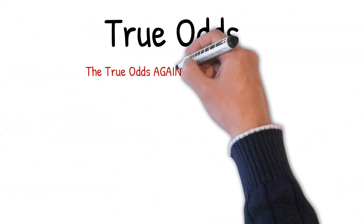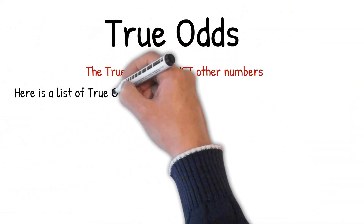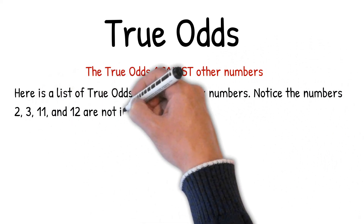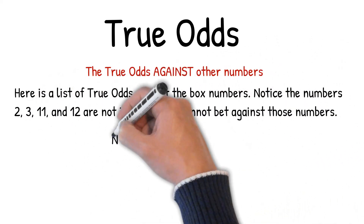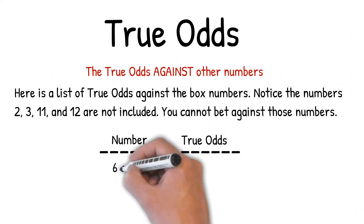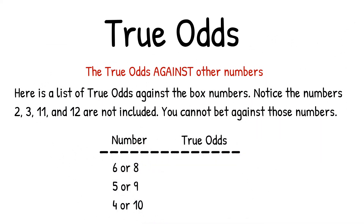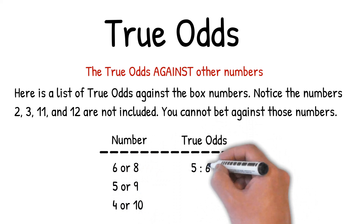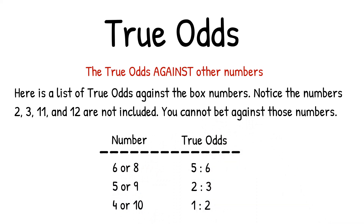Here is a list of true odds against the box numbers. Notice the numbers 2, 3, 11, and 12 are not included — you cannot bet against those numbers. Six or 8 is 5 to 6. Five or 9 is 2 to 3. Four or 10 is 1 to 2.